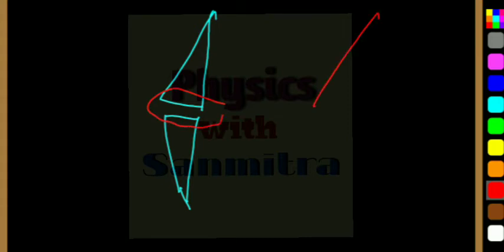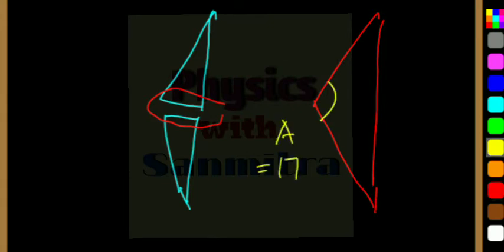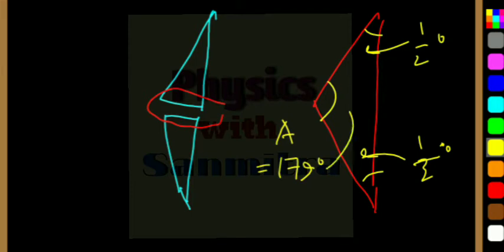In case of Fresnel's biprism, there is a condition that the angle of prism A should be 179 degrees. Therefore, this will be half a degree and this will be half a degree, making 179 degrees total. Why is this angle so large? Because this is a very thin prism.